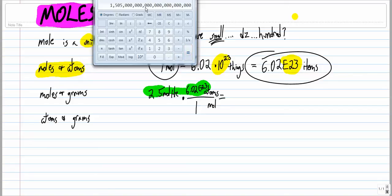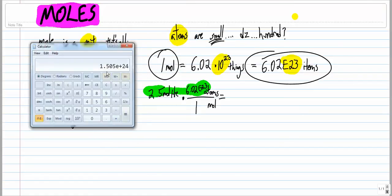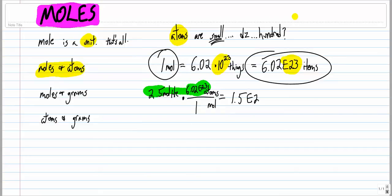Now, I'm not going to write that. If you hit this button on the Windows calculator, it makes it into scientific notation. So our answer here is, let me switch to my pen again. 1.505. I'm going to call that 1.5 times 10 to the 24. Moles canceled. So this is going to be atoms of helium. And that is our answer. So if we have 2.5 moles of helium, that is 1.5 times 10 to the 24th atoms of helium.